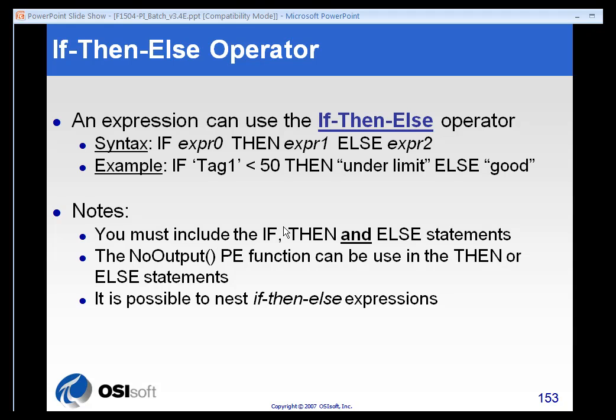So if you have a function where there's no else statement, it's just if and then, you can use the else no output function to say just do nothing in an alternate condition. So if you're going to use if-then-else, you have to use the if, then, and the else. And if you have no else condition, use no output.